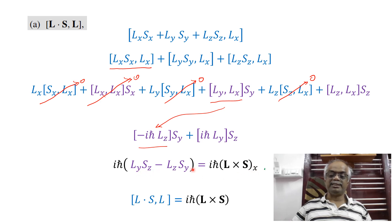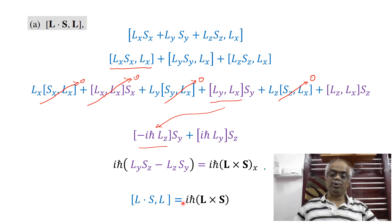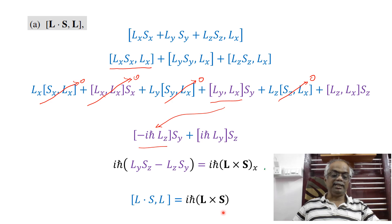For the X component we get L×S in the X direction. Similarly, replacing X by Y gives the Y component of L×S, and doing the same for the Z component gives the Z component. In general, the commutation of L·S with L is equal to iℏ(L×S). This is the final answer for Part A.